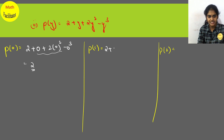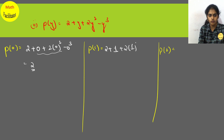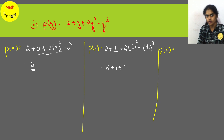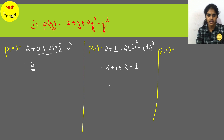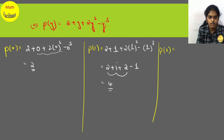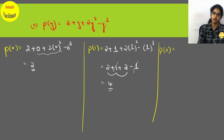For p(1), substitute 1: 2 plus 1 plus 2 into 1² minus 1³. That equals 2 plus 1 plus 2 into 1 minus 1. So 2 plus 1 is 3, plus 2 is 5, minus 1 is 4. Or directly, the plus 1 and minus 1 cancel, leaving 2 plus 2 equals 4.